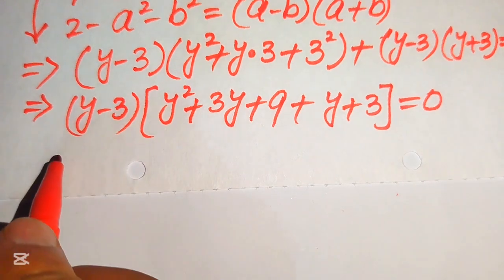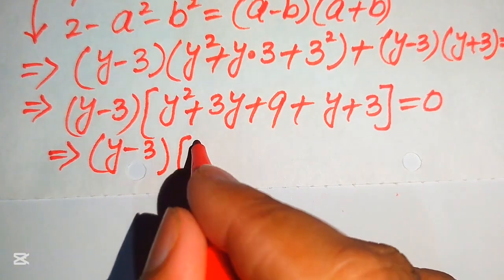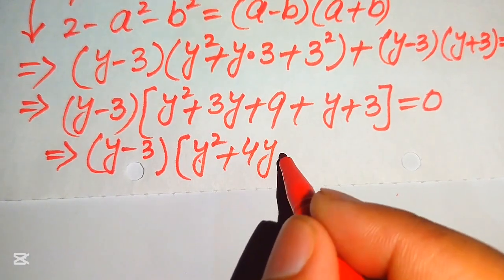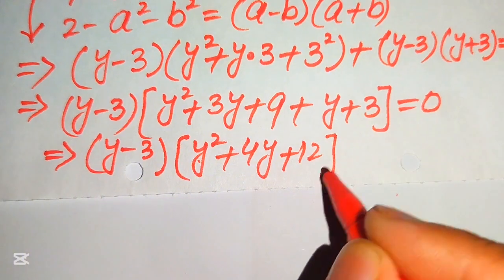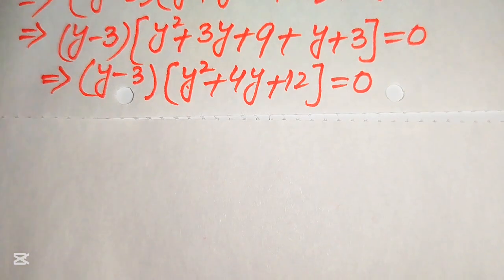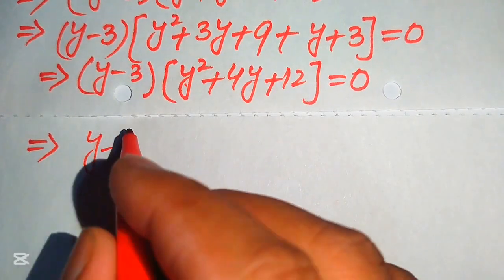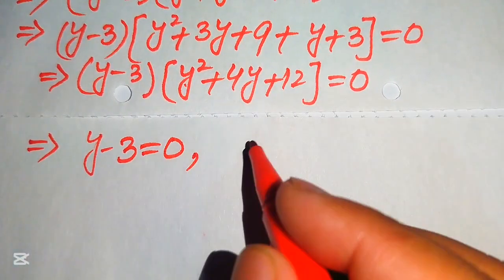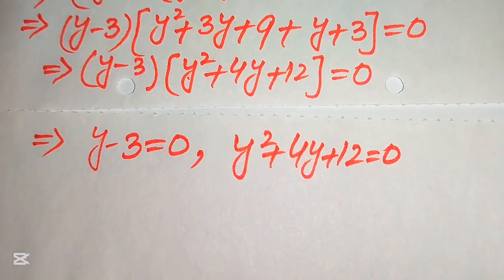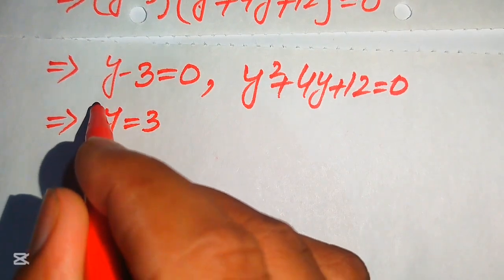Both terms involve (y minus 3), so we take it as a common factor. Combining the remaining terms: y² plus 3y plus y gives 4y, and 9 plus 3 gives 12. The equation becomes (y minus 3)(y² plus 4y plus 12) equals 0. We split into two cases: Case 1: y minus 3 equals 0, giving y equals 3. Case 2: y² plus 4y plus 12 equals 0.